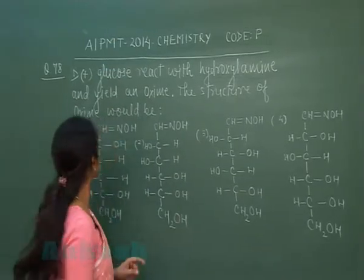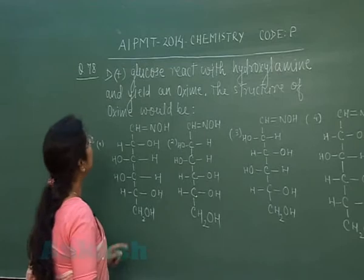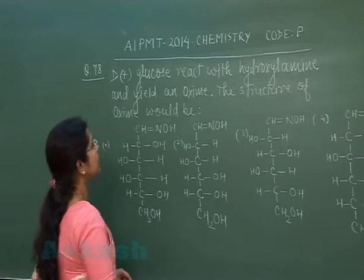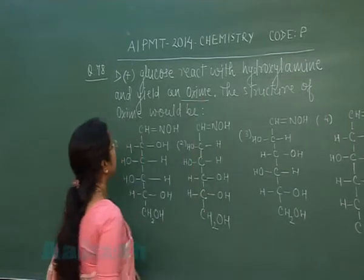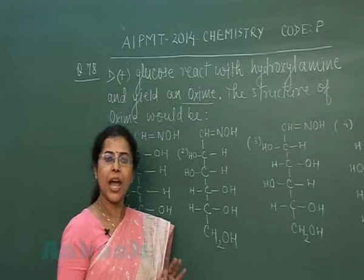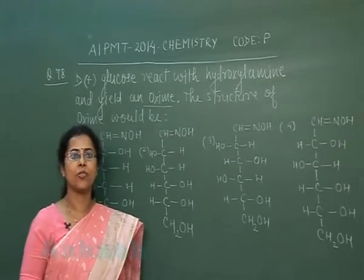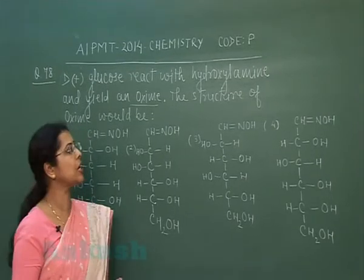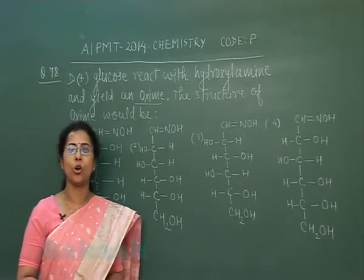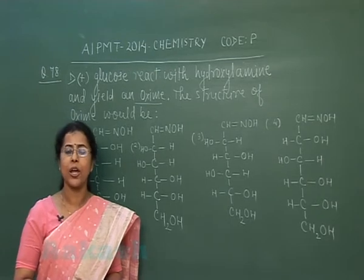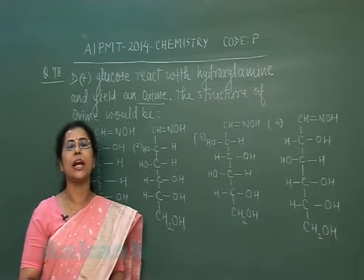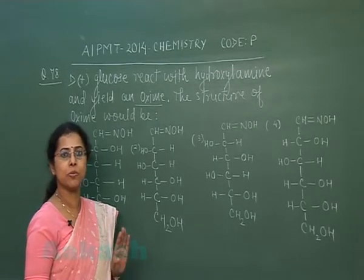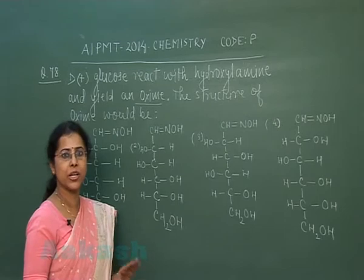Question number 78: D-glucose reacts with hydroxylamine and yields an oxime. What would the structure of the oxime be? Glucose has an aldehydic functional group, and the reaction with hydroxylamine is a property of the carbonyl (aldehydic) group. This means except the aldehydic functional group, the rest of the carbon chain will remain intact.